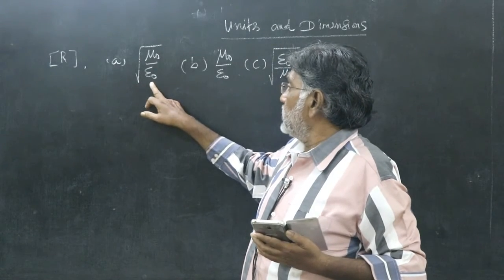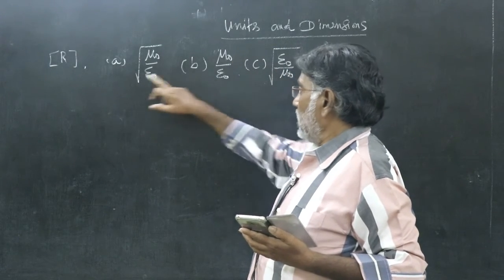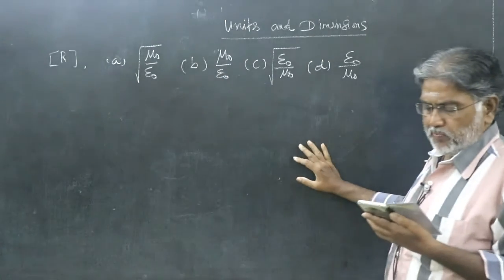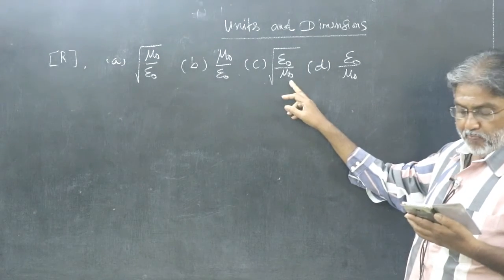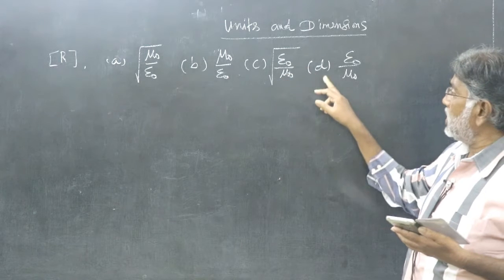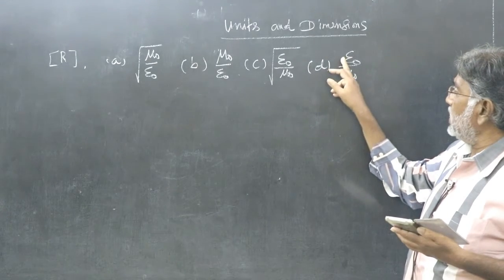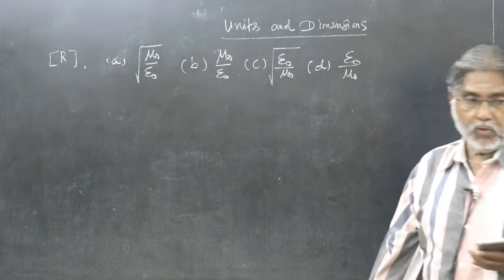Root of mu naught by epsilon naught, option A. Option B, mu naught by epsilon naught. Option C, root of epsilon naught by mu naught. Option D, epsilon naught by mu naught.